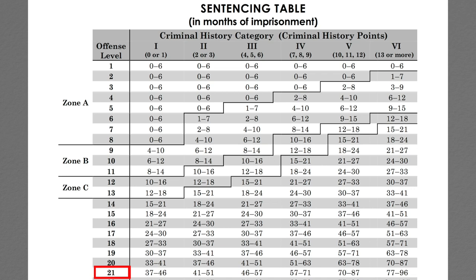Now that you have your total offense level of 21, you consider any chapter three adjustments: is there a particularly vulnerable victim? Are you playing a major or minor role? Was there a breach of trust? And if there's a plea, is there acceptance of responsibility? Let's say there are no victim, defendant-specific, or role enhancements, but there are three points for acceptance of responsibility — you subtract three points from 21 and go to offense level 18, which is your total adjusted offense level.